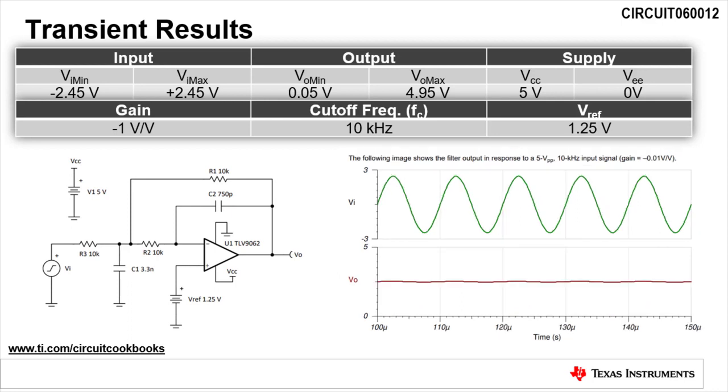Running a transient analysis at 10 kilohertz shows that the input signal is attenuated. The output is a near-DC result of 2.5 volts.